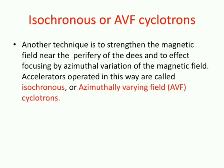Another way of increasing the frequency of oscillations is by making use of a varying magnetic field. The magnetic field can be increased along the periphery of the Ds, and this effect is called azimuthal variation of the magnetic field. The accelerators which operate in this way are called isochronous or azimuthally varying field cyclotrons.